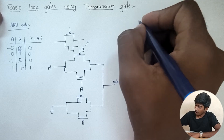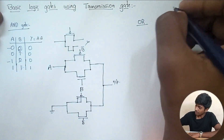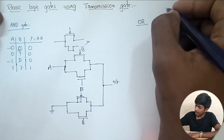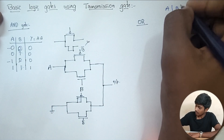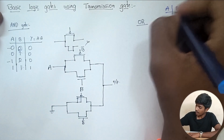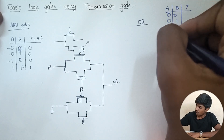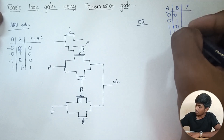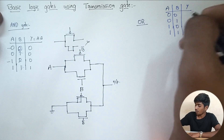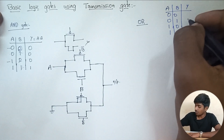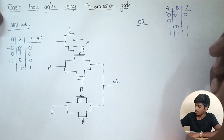Similarly, for the OR gate, the truth table is: A, B, and Y — 0,0 gives 0; 0,1 gives 1; 1,0 gives 1; 1,1 gives 1. For the OR gate, if one of the inputs is high, the output is high. The remaining case gives 0.